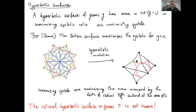It was proved by Jenni that the Bolza surface maximizes the systole among all hyperbolic surfaces of genus two. You can get the Bolza surface by taking a regular octagon in the hyperbolic plane with interior angles equal to π/4 and then gluing opposite sides together. All eight corners come to a single point, and the total angle around that point is 2π, giving a nice hyperbolic metric. The surface is the most symmetric surface in genus two — it's tiled by (2,3,8) triangles, and the isometry group acts transitively on these triangles.